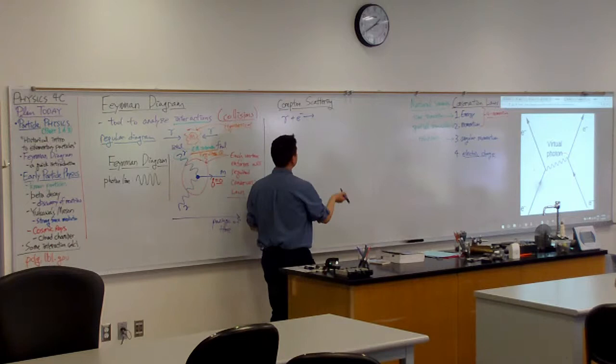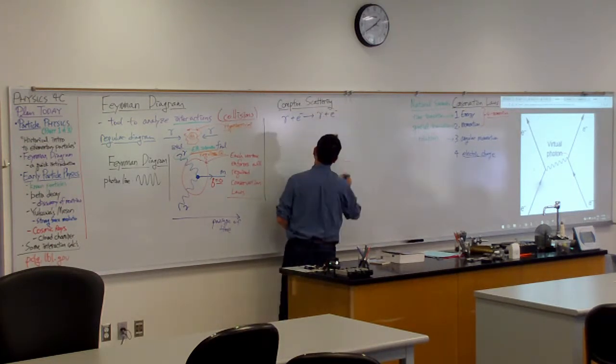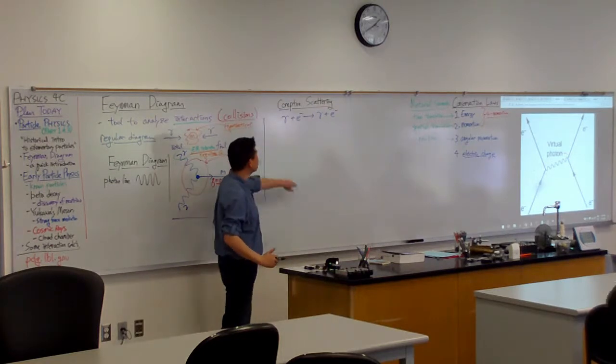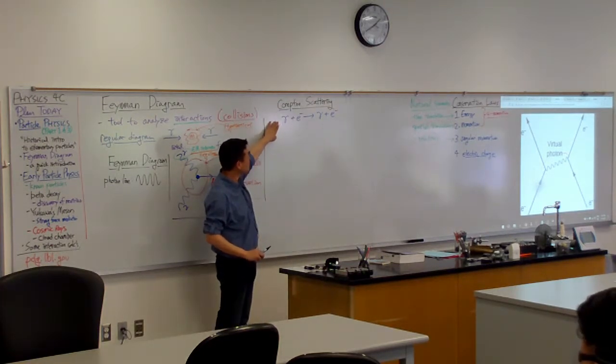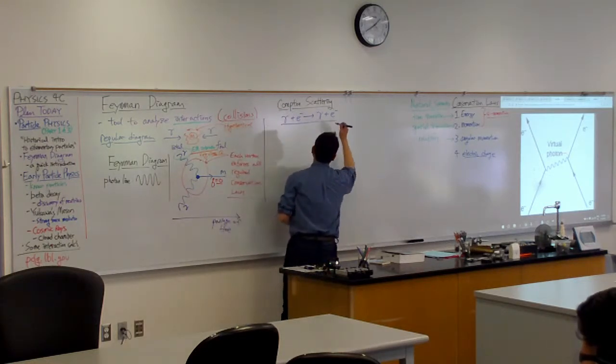You still have a photon that bounces off and you have electron that also bounces off. So this is the kind of reaction equation you might draw, which doesn't seem like a lot, but that's the Compton scattering equation.